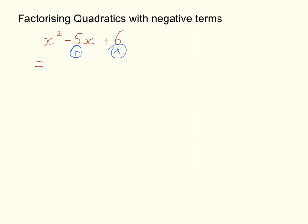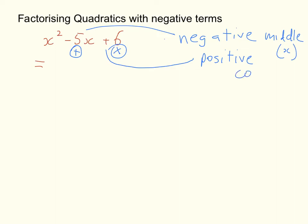Now straight away I look at this and I say, if I have a negative term in the middle, then what it will mean is that at least one of my numbers is going to have to be negative. Now how do I know straight away that both of my numbers are going to be negative? Well, if I end up with a negative middle or a negative x, but a positive constant, then I'm going to be dealing with a negative multiplied by a negative.